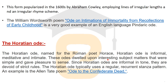Since Horatian odes are informal in tone, they are devoid of strict rules — very easy to understand, easy to compose, easy to read or sing. The Horatian ode typically uses a regular, recurrent stanza pattern. A best example is Alan Tate's poem 'Ode to the Confederate Dead'. Unlike Pindaric ode, it has a simple rhythmic structure written in an informal tone that gives pleasure to the senses.